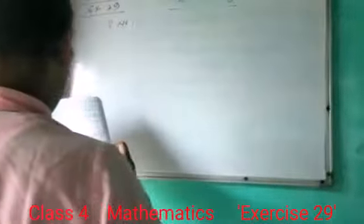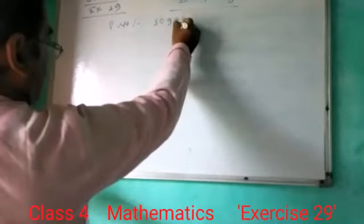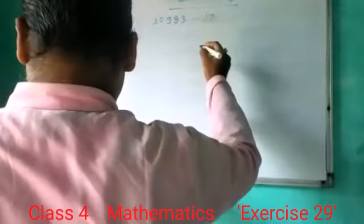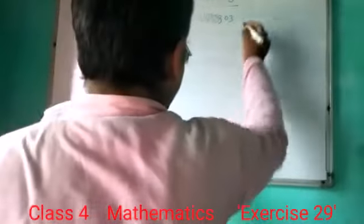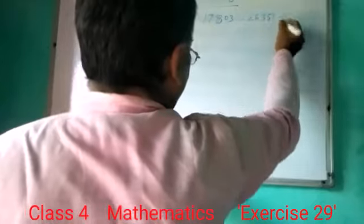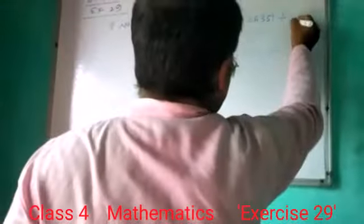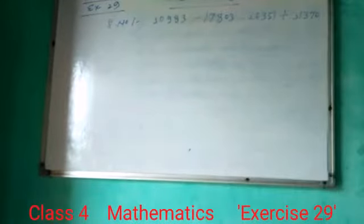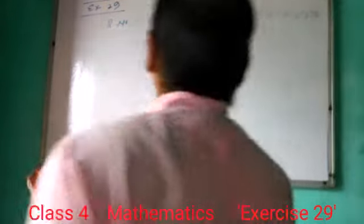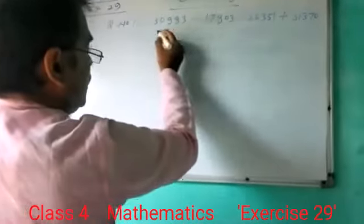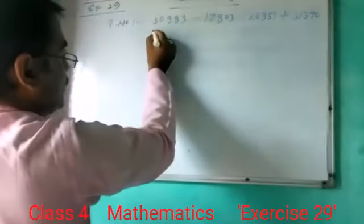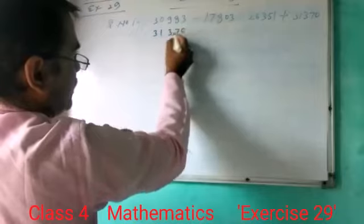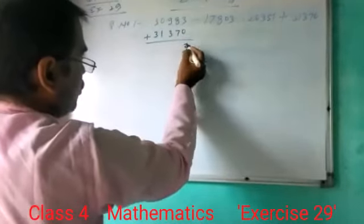Exercise 29, question number one: 30983 minus 17803 minus 26351 plus 31370. Here we see addition, so I first sum 30983 and 31370.